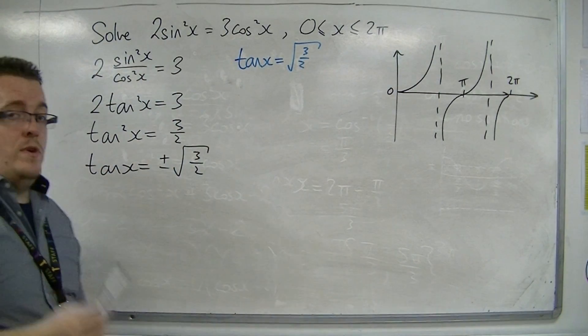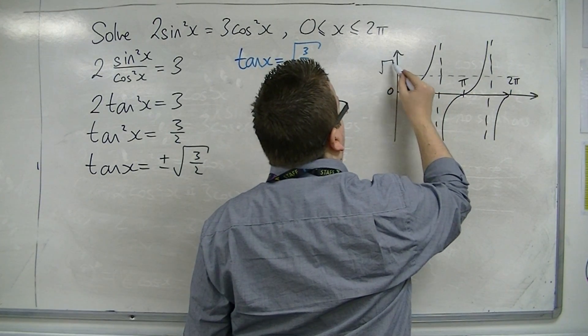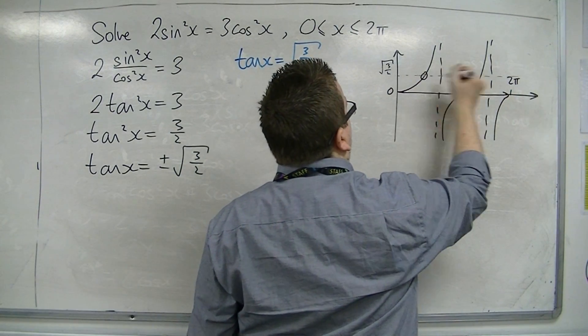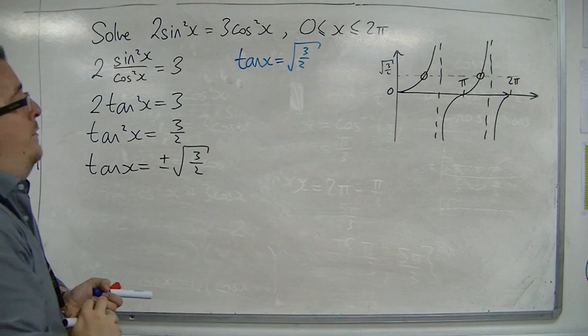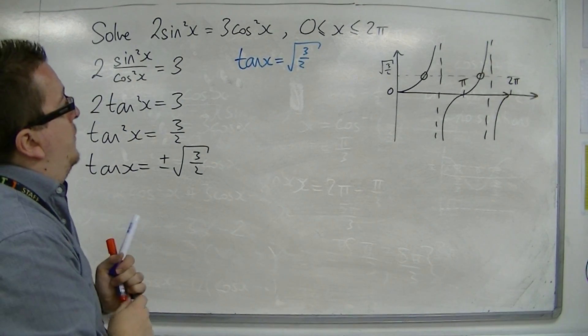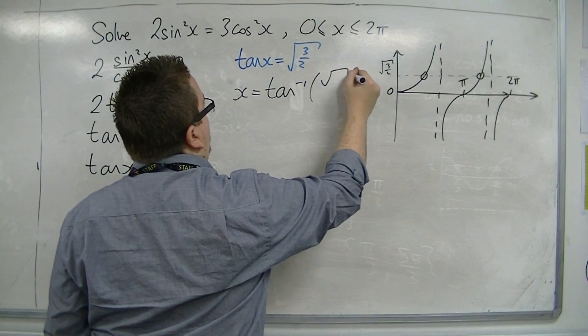Root 3 over 2 is going to give me two possible solutions. First of all, inverse tan of root 3 over 2.